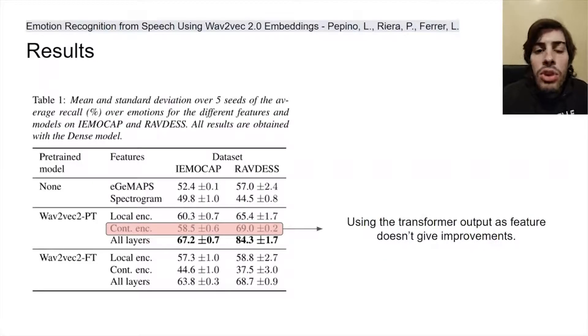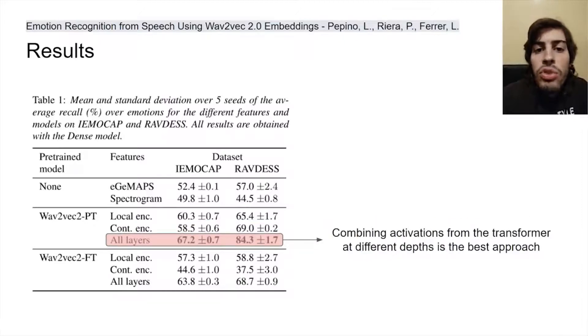We think that this is because of the pre-training objective, which makes these features very similar to the CNN encoder quantized representations. The best approach was to combine activations from all the transformer blocks.